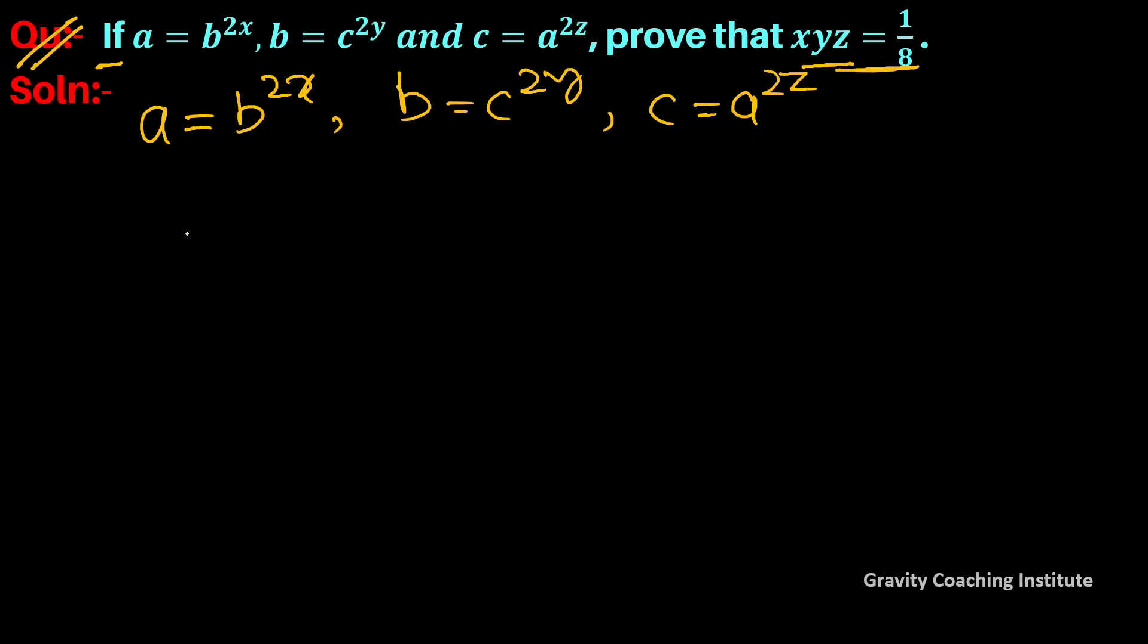So c equals a to the power 2z, and now we are going to put a value here. So this is b to the power 2x, and that to the power 2z. Power to the power, we multiply, so this is 4xz.